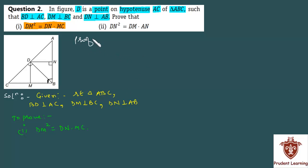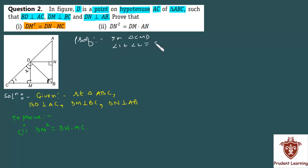Let's start with triangle CMD. In this right triangle, angle M is 90 degrees. In a right triangle, the sum of the two acute angles is always 90 degrees. So in triangle CMD, we have angle 1 plus angle 2 equals 90 degrees, since angle M is 90 degrees. This is equation 1.